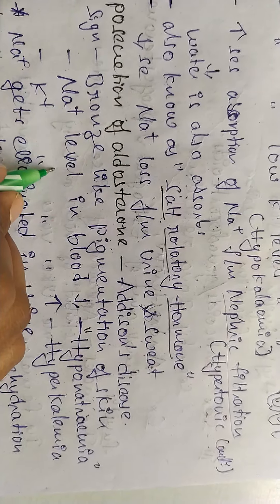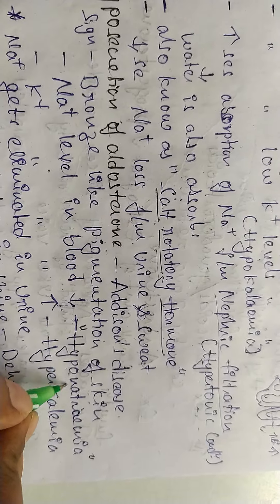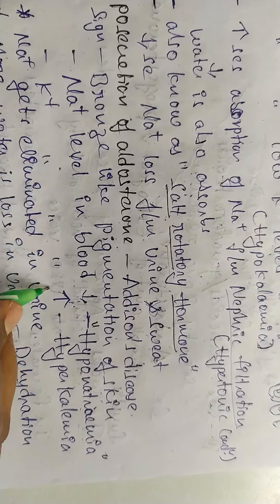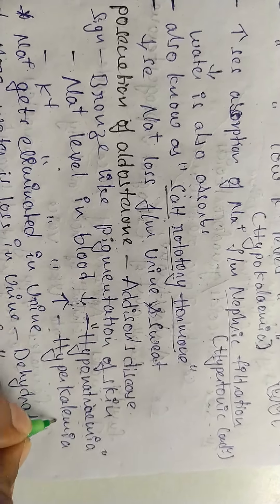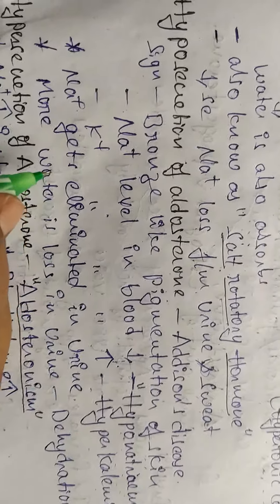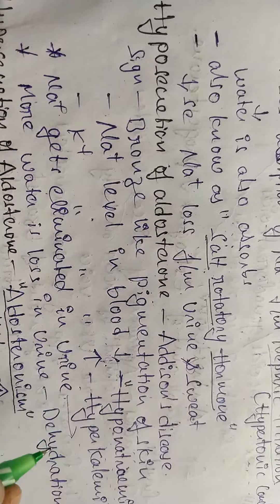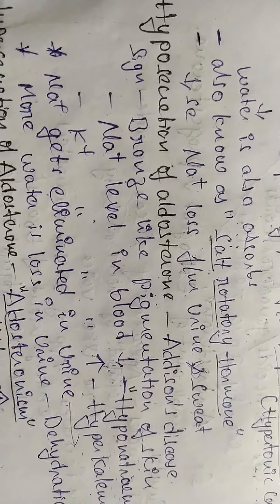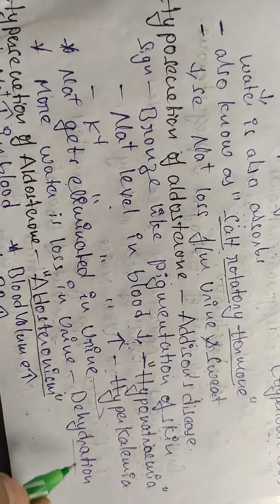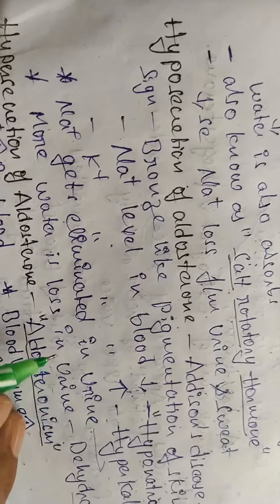In hyposecretion of aldosterone, sodium levels in the blood decrease — a condition called hyponatremia. Potassium levels increase — a condition called hyperkalemia. Other symptoms include sodium elimination in urine, increased water loss in urine, and dehydration. These are the symptoms of decreased secretion of aldosterone.